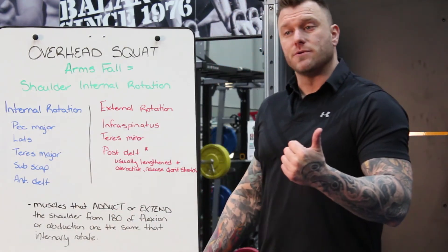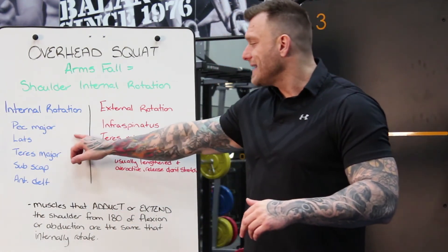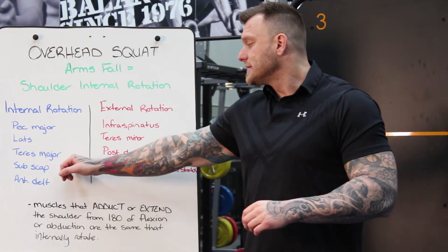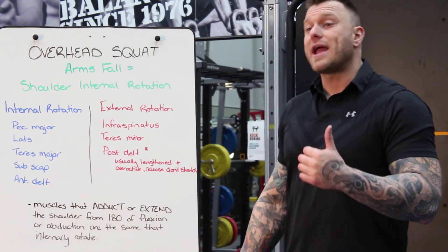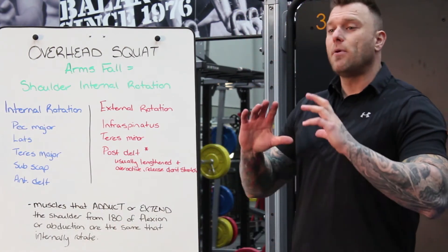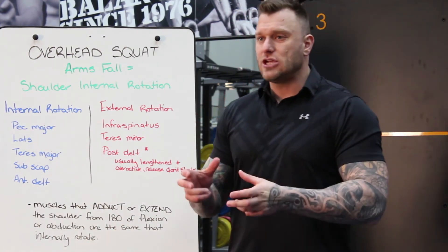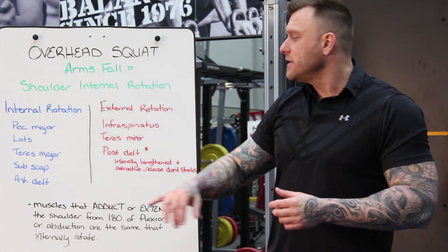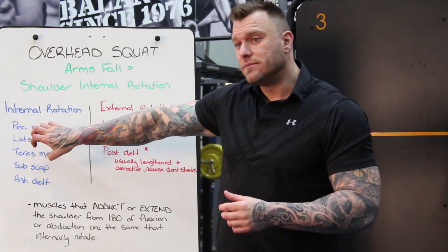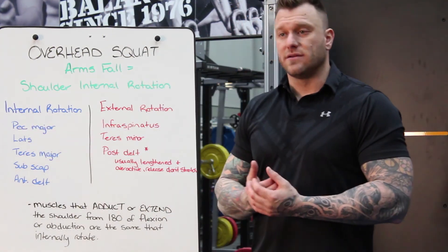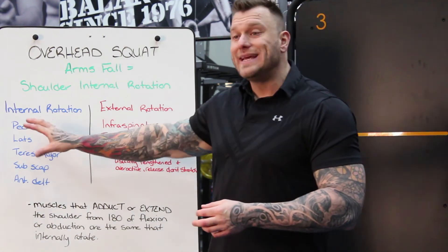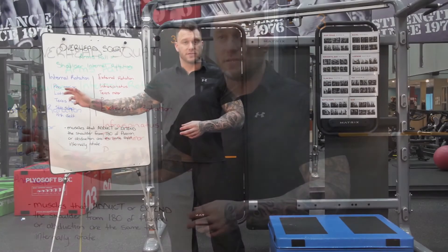That's going to be our pec major, our lats, our teres major, subscap, and our anterior delts. People having that issue with the arms falling forward — these will be tightened and overactive, meaning that we need to release these muscles.